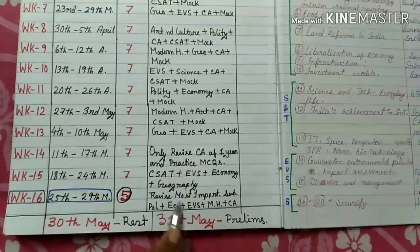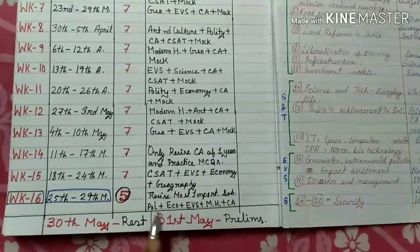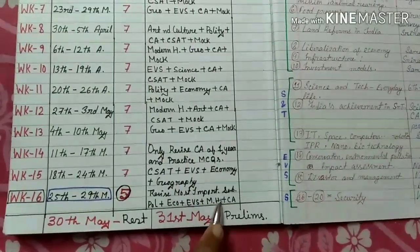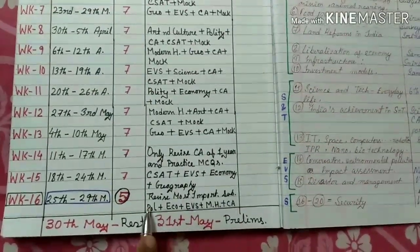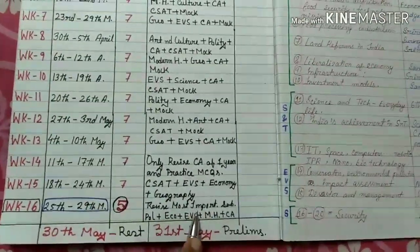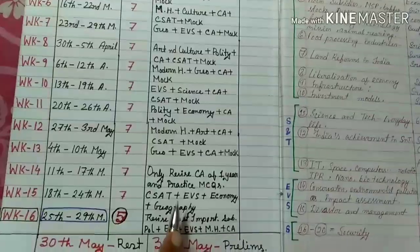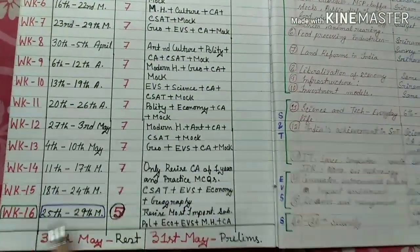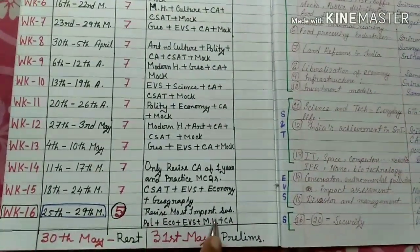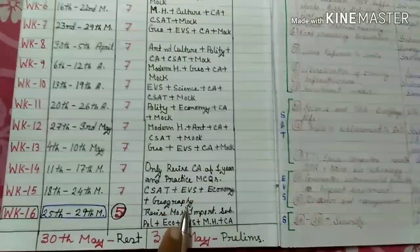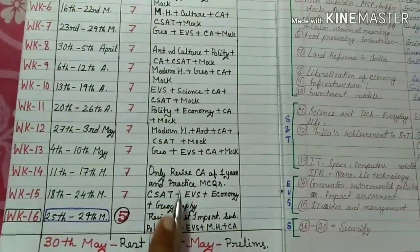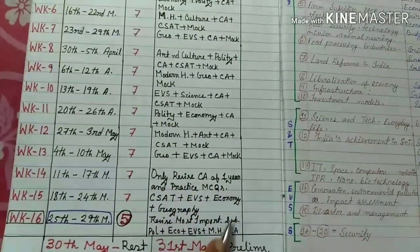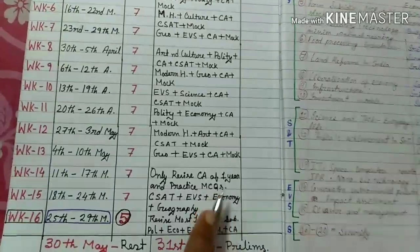The most important subjects are polity, EVS, modern history, and current affairs. These five subjects are most important in the Prelims because almost 15 to 20 percent of your exam is from those subjects, as I already discussed in my previous video.